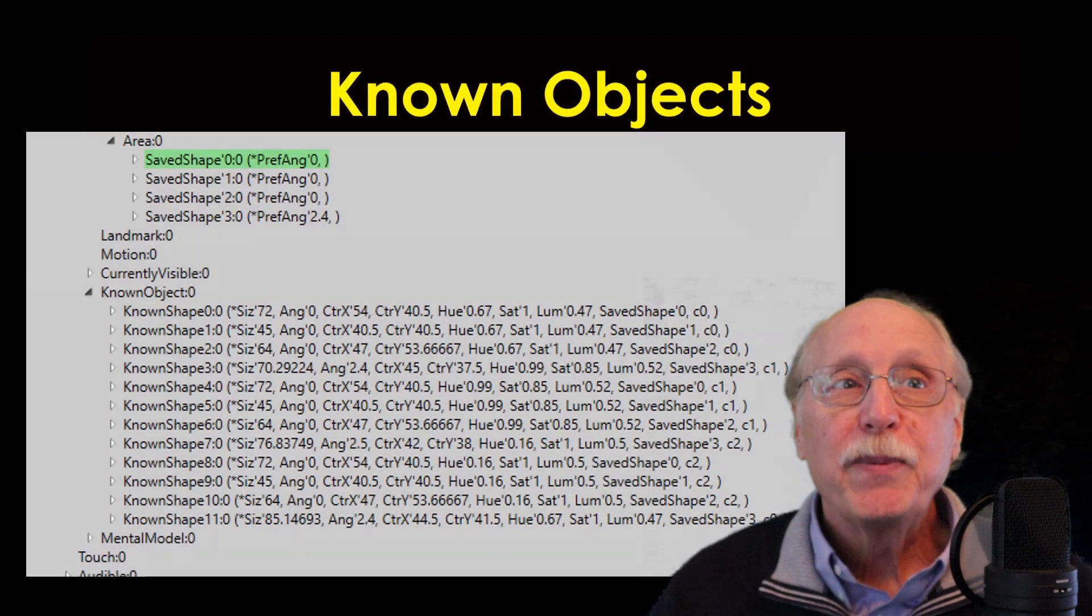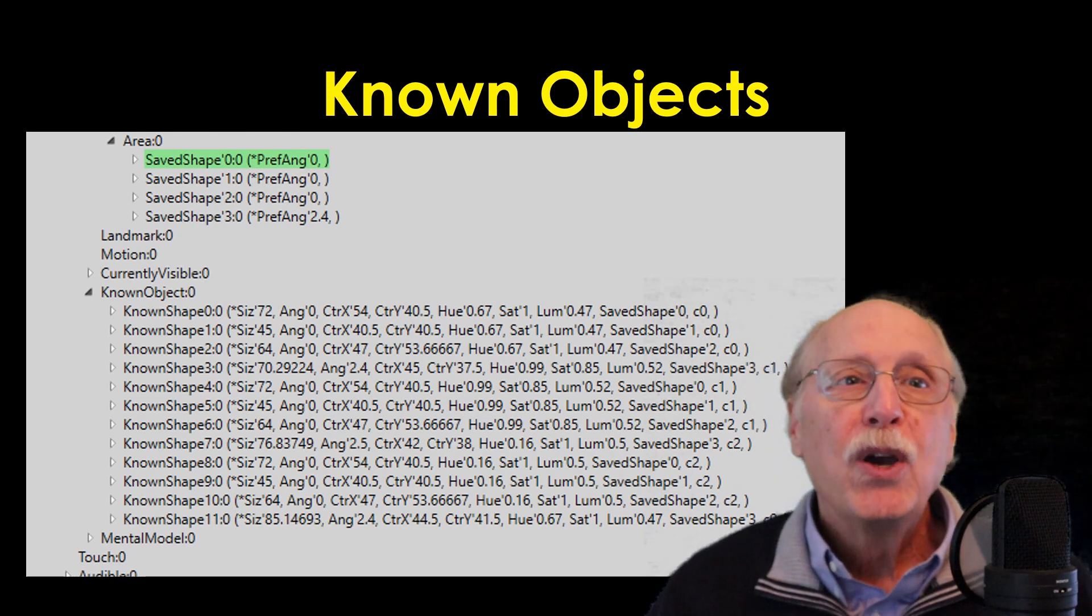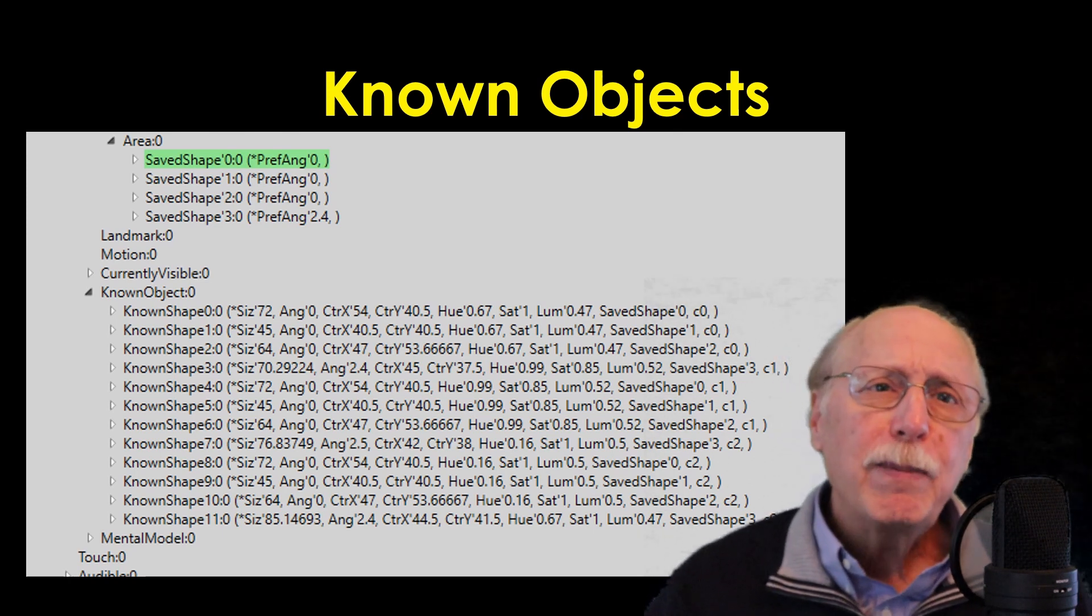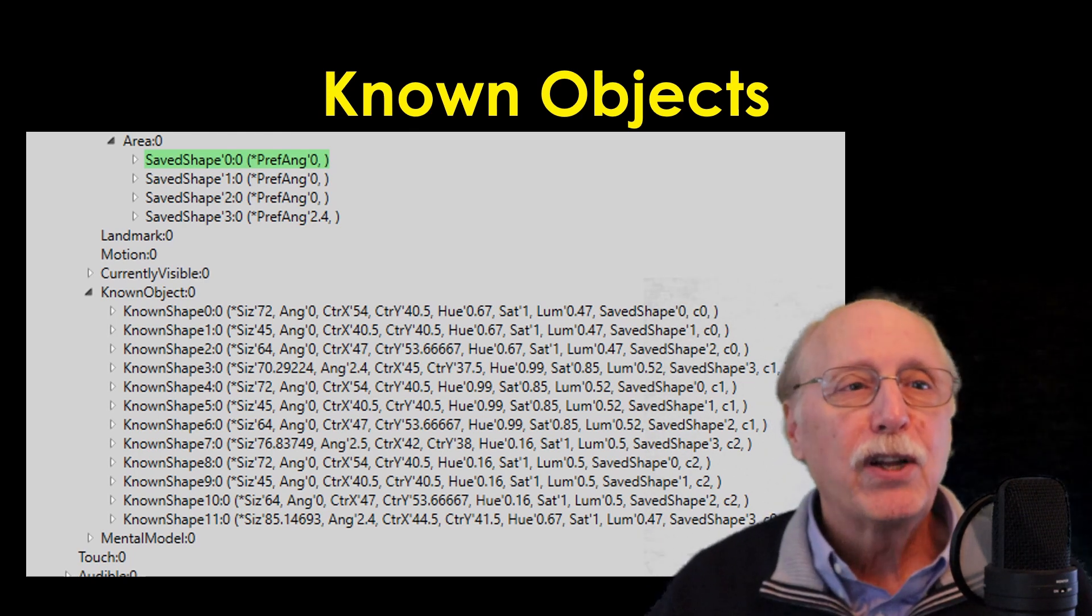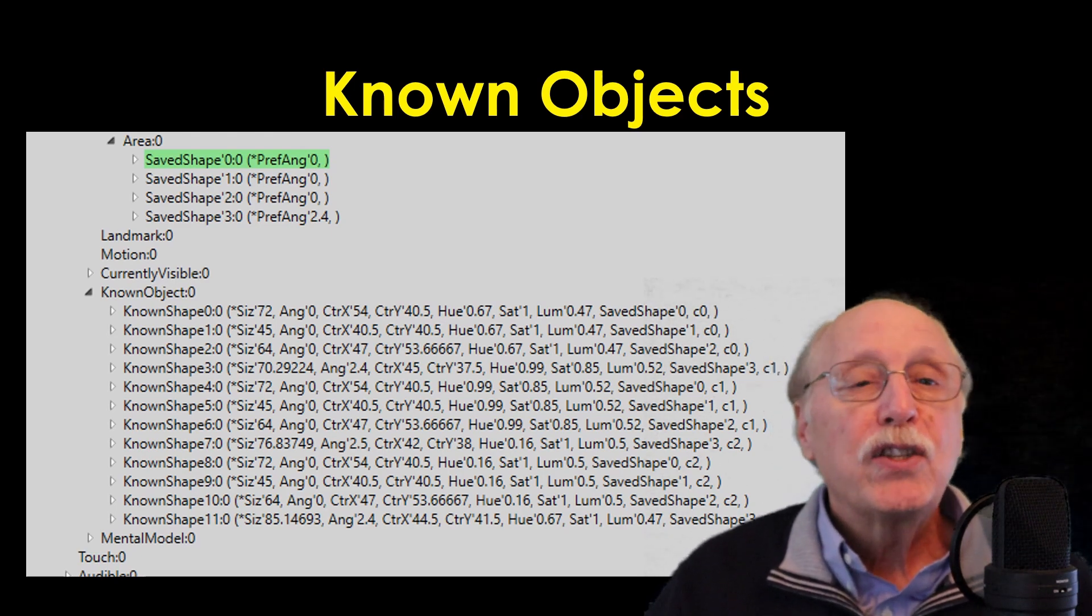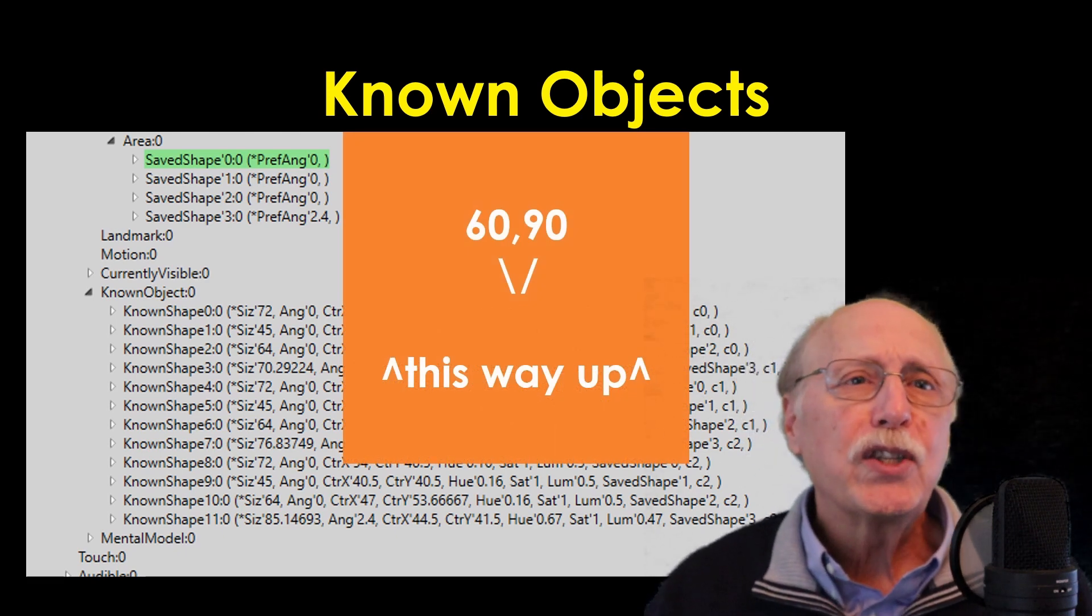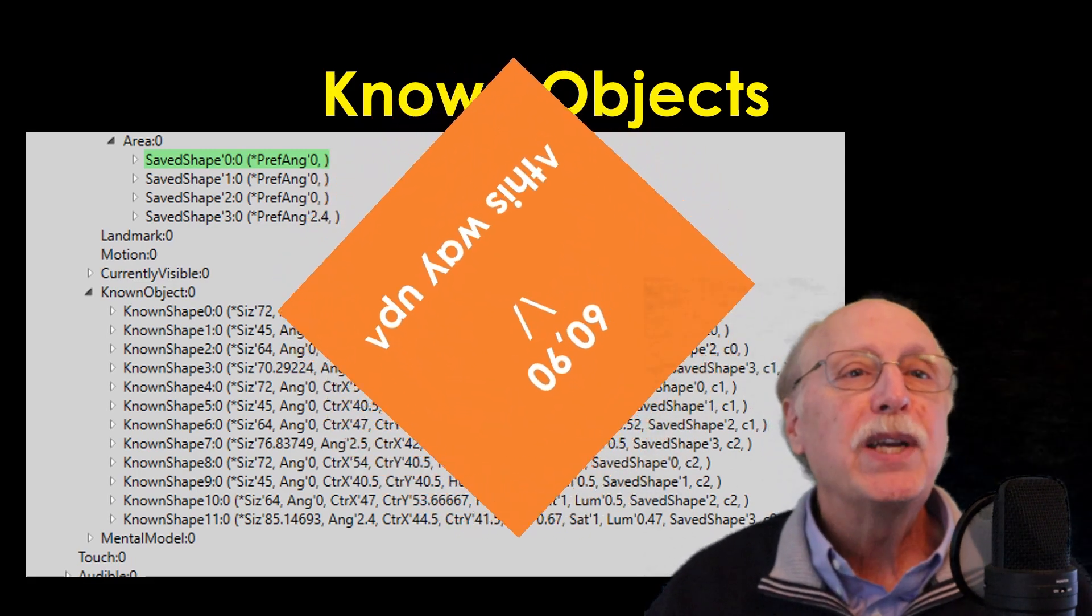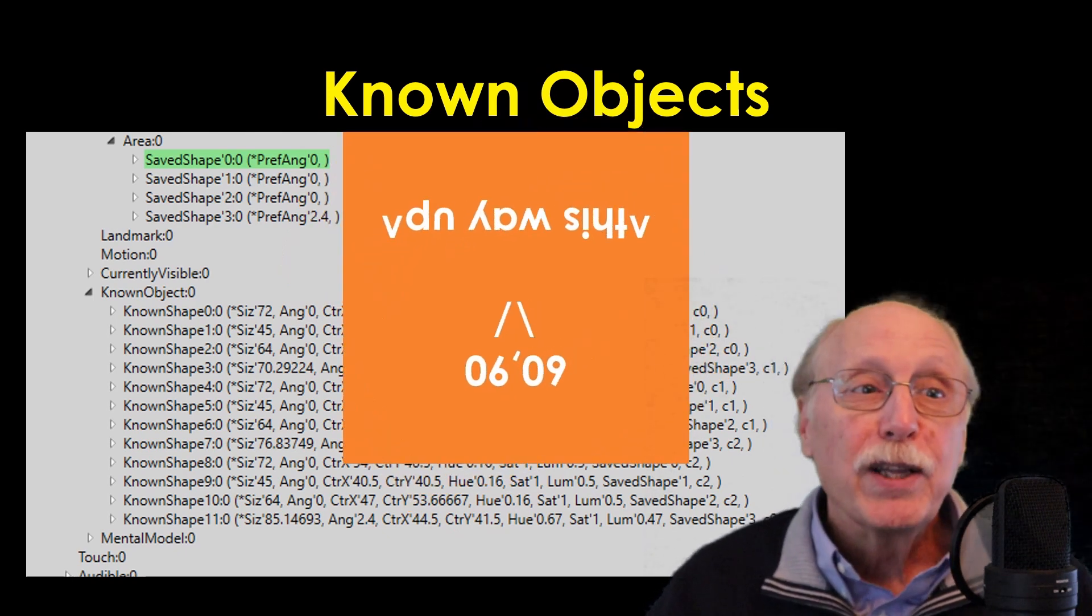Known objects: This step matches the area properties against a library of known objects. Where areas are simply areas of color in the visual field and shapes are abstract sets of corners, a known object represents a physical object which is a combination of properties. Here you can also see that saved shapes from the previous step have a preferred angle. This is necessary because, although you want to be able to recognize objects in any orientation, you also need to be able to resolve ambiguities with objects which may differ only in their orientation.